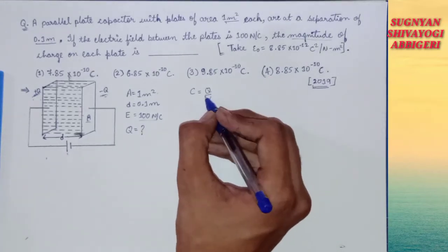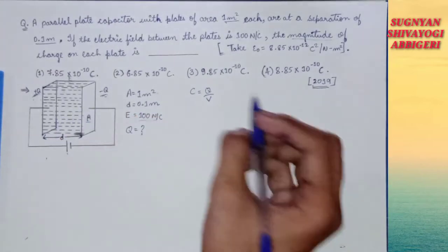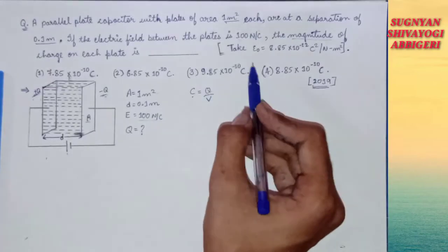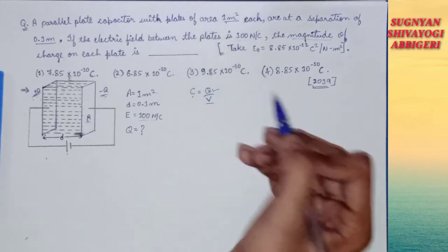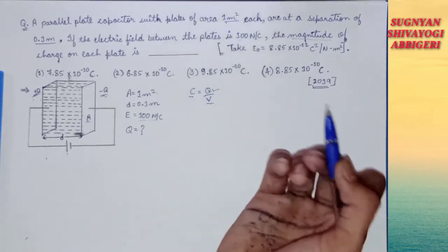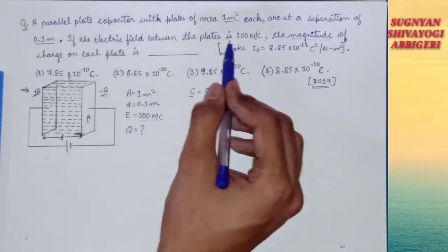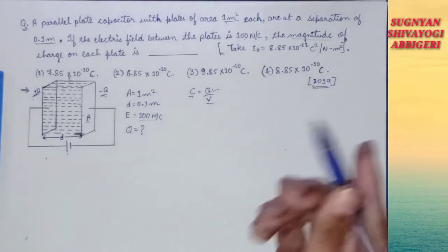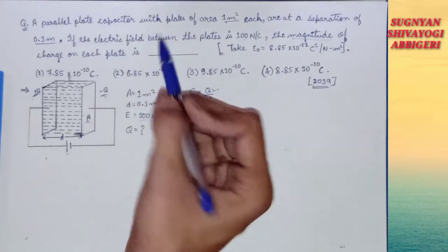For any capacitor — whether spherical, parallel plate, or cylindrical — there is one basic formula: C = Q/V, where Q is the charge on the capacitor, V is the voltage between the two plates, and C is the capacitance. In this question we need Q, but we have neither the voltage V nor the capacitance C. However, we do have the electric field value of 100 newton per coulomb.